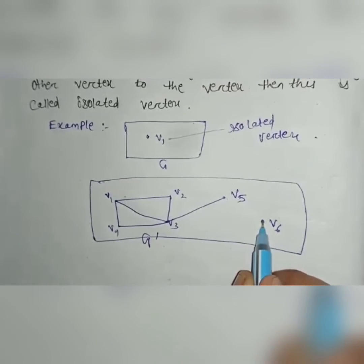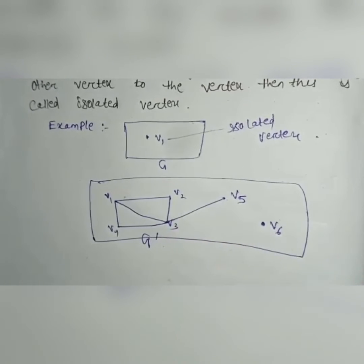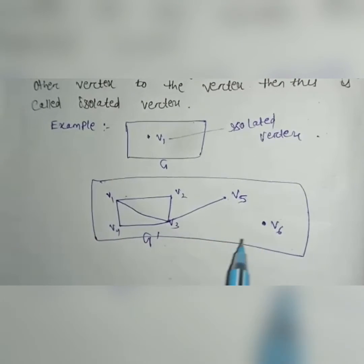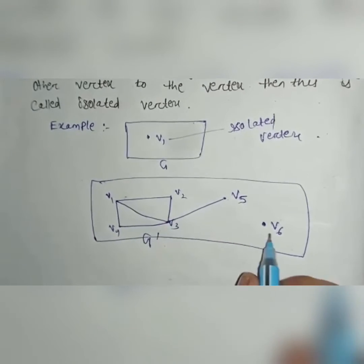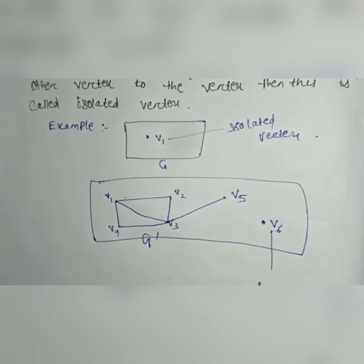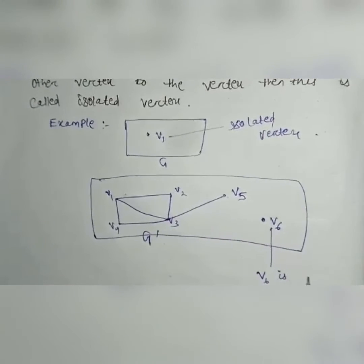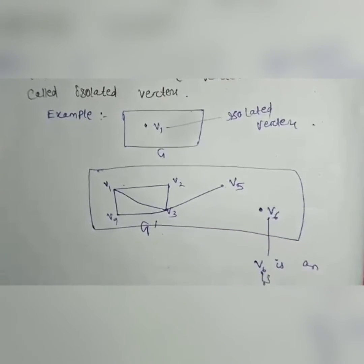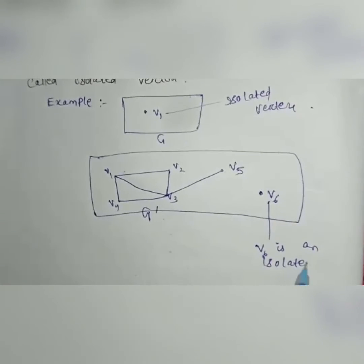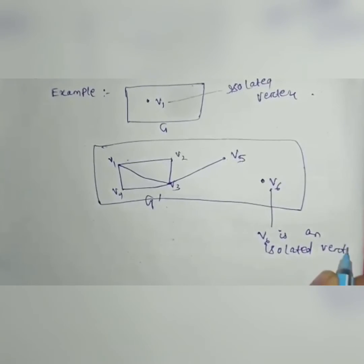See, V6 is not connected to any other vertex and there is no edge between V6 and any other vertex. So here, only V6 is an isolated vertex.